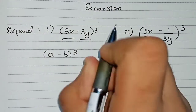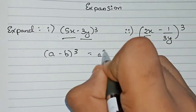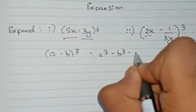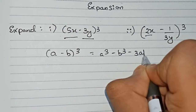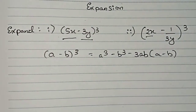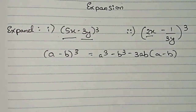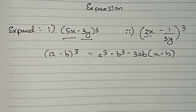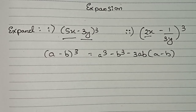The formula for a minus b whole cube is: a cube minus b cube minus 3ab times (a minus b). This will be our formula to solve both questions. I have made a complete video on standard formulas for expansion — the link will be in the description, you can check it.